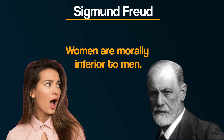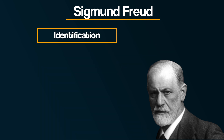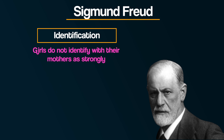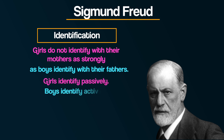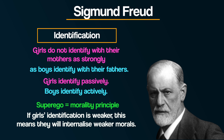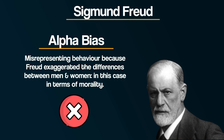If you need to refresh your memory of the structure of personality and psychosexual stages of development, you can watch the linked video. But what's this got to do with gender bias? For Freud, women are morally inferior to men, because of the process of identification. Freud argued that girls do not identify with their mothers as strongly as boys identify with their fathers — girls identify passively, whereas boys identify actively. If girls' identification is weaker, this means they will internalise a weaker set of morals compared to boys. As a result, women are morally inferior to men, according to Freud. Here, Freud is guilty of alpha bias — misrepresenting behaviour because he has exaggerated the differences between men and women, in this case in terms of morality.